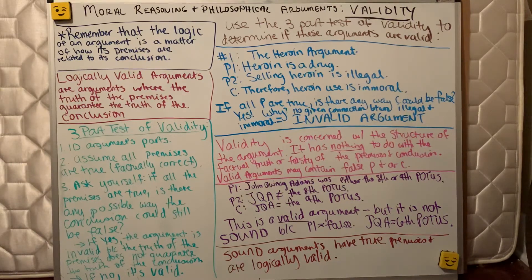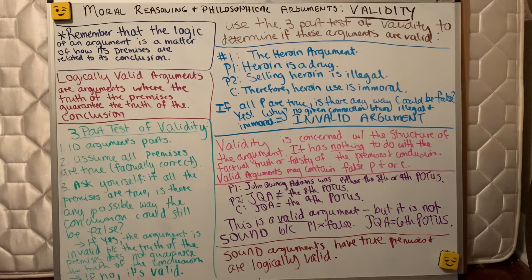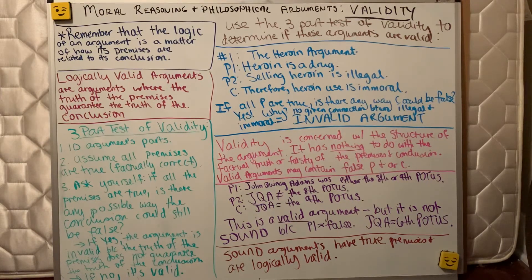A sound argument is an argument that has factually true premises and is logically valid. If it's valid, it has the proper structure where the truth of the premises guarantees the truth of the conclusion. But sound arguments also have to contain true information in those premises. So after you've identified the argument and determined whether it's valid, you then have to go on to examine the actual content of the argument and see if that information is factually correct.